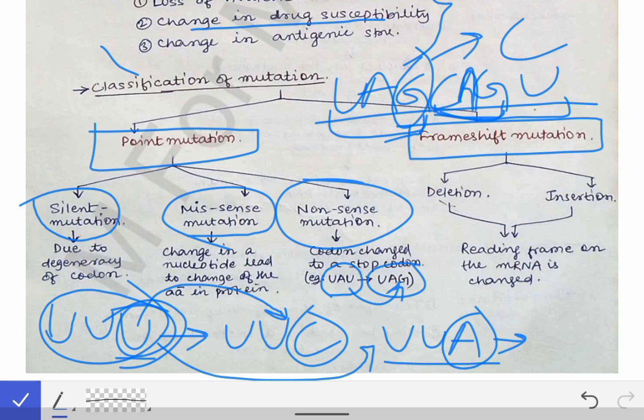Frameshift mutation, as described earlier, occurs due to deletion or insertion of a nucleotide in the mRNA or DNA sequence. After the deletion or insertion, there is a change in the reading frame of the codons over that mRNA, which causes changes in the amino acid sequence of the resulting protein. This covers plasmids and mutations; next we will talk about transformation, transduction, and conjugation — the different methods of gene transfer in bacteria.